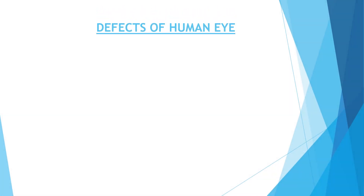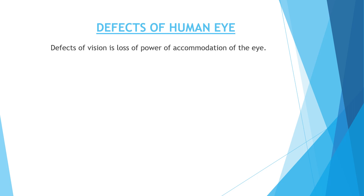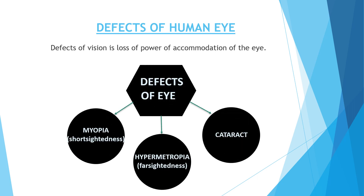Let's continue with some defects of the eye. Defects of vision are actually the loss of power of accommodation of the eye. There are three main defects: Number 1, Myopia, which is also called short-sightedness. Number 2, Hypermetropia, which is also called far-sightedness. Number 3, Cataract. Let's discuss each in detail.